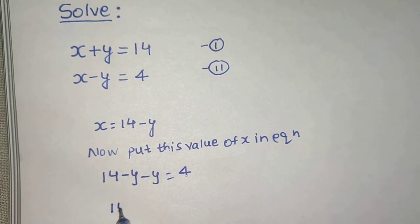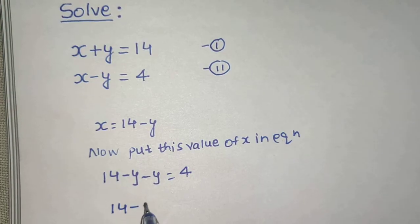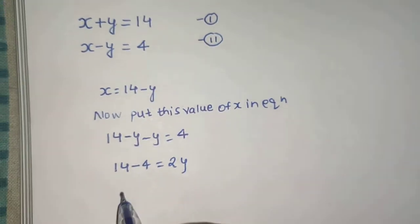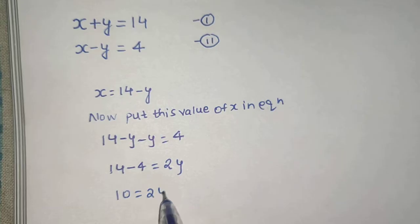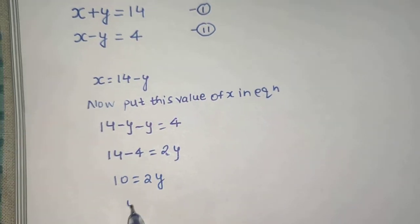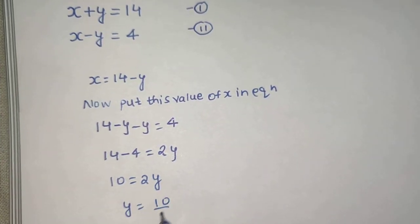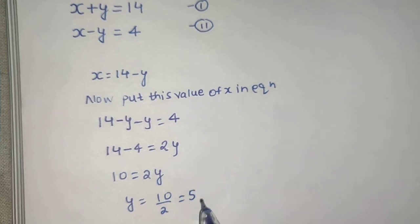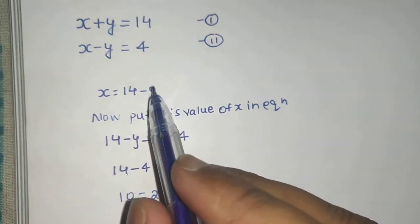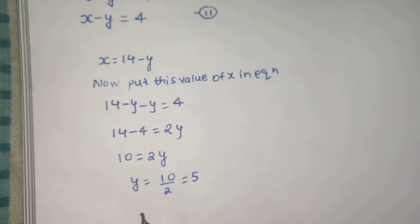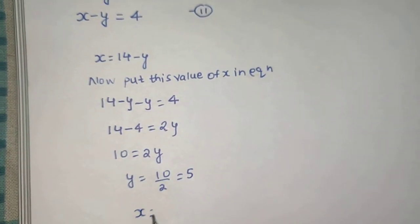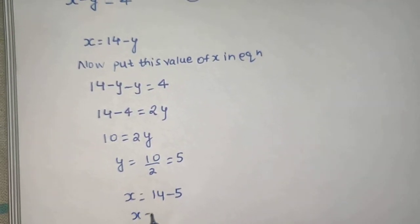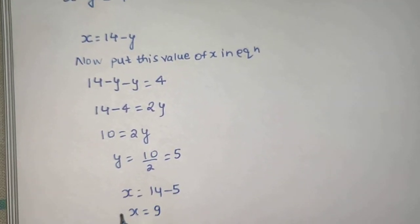So, 14 minus 4 equals to 2y, giving 10 equals to 2y, or y equals to 10 divided by 2, which is 5. Now take this 5 and put it back in the equation. So x equals to 14 minus 5, which gives x equals to 9.